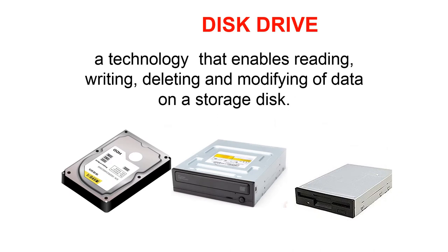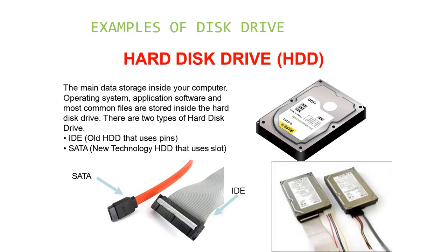The disk drive is a technology that enables reading, writing, deleting, and modifying of data on a storage disk. One example is the hard disk drive, which is the main data storage inside your computer — the operating system, application software, and most common files are stored here. There are two types: IDE, the older HDD that uses pins, and SATA (Serial Advanced Technology Attachment), the newer HDD that uses a slot.